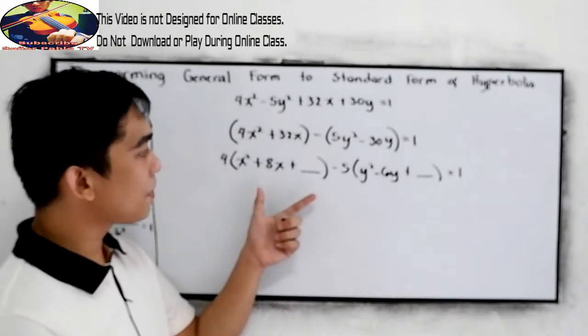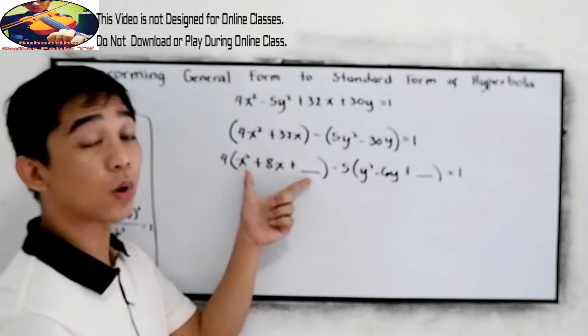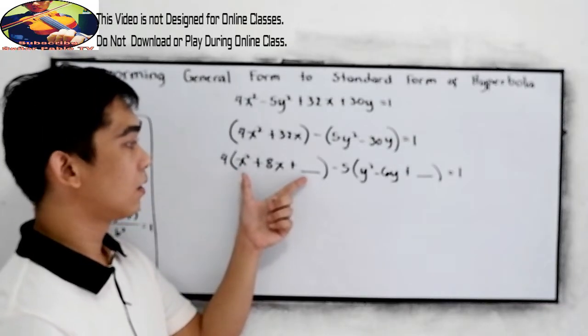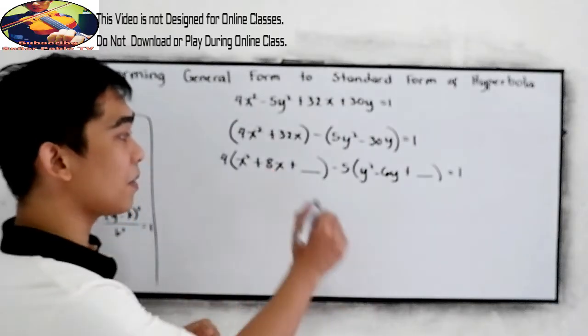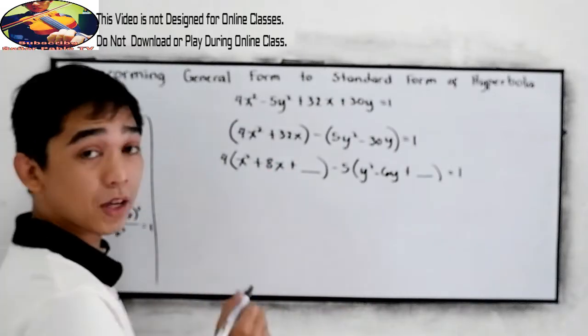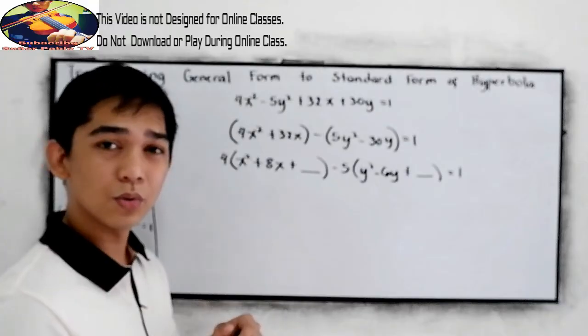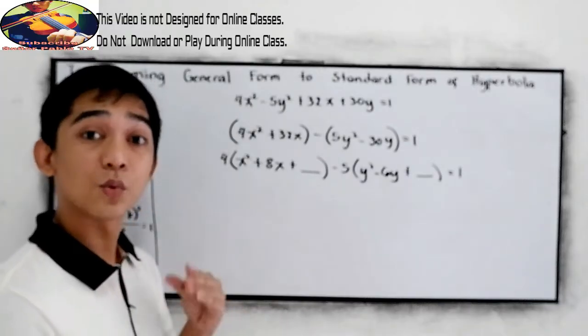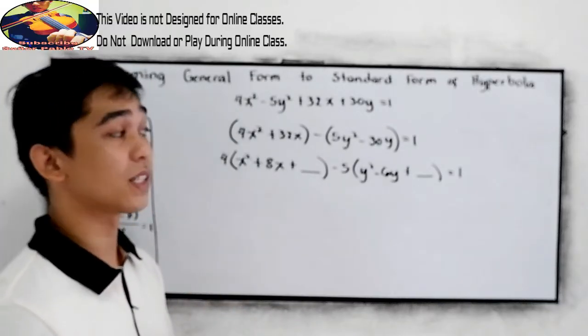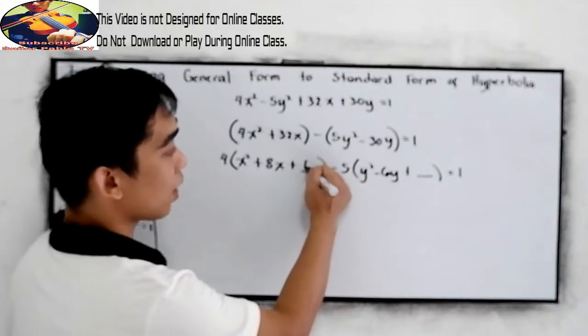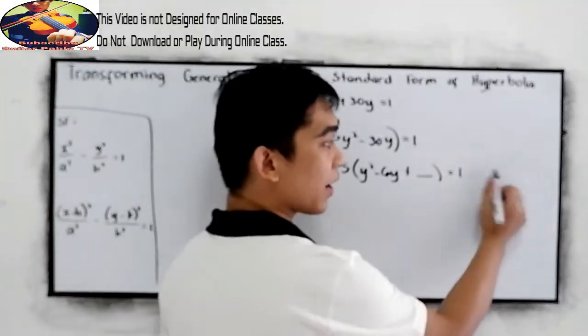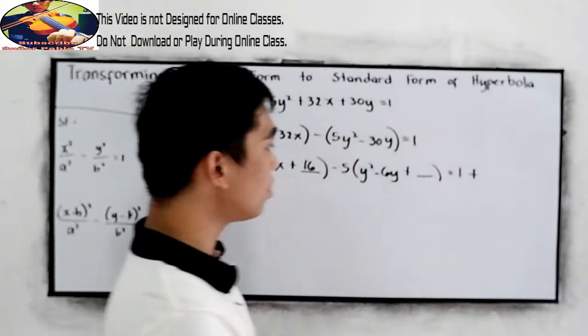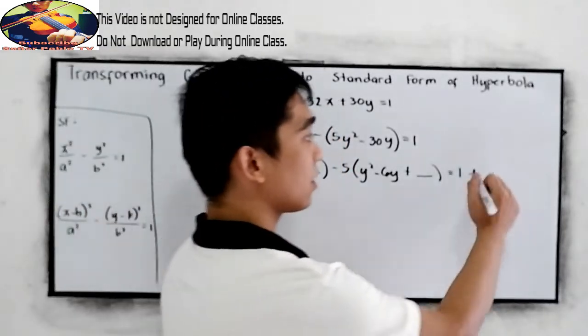Now, let us make this a perfect square trinomial. So, divide by 2. Get the middle term divided by 2. 8 divided by 2, that is 4 squared. 4 squared is 16. So, we need to add 16 here. And, of course, on the right side, we have 4 here, multiply it to the 16.